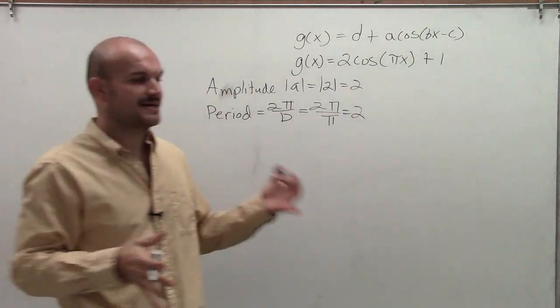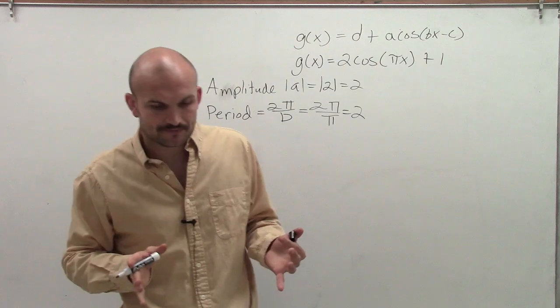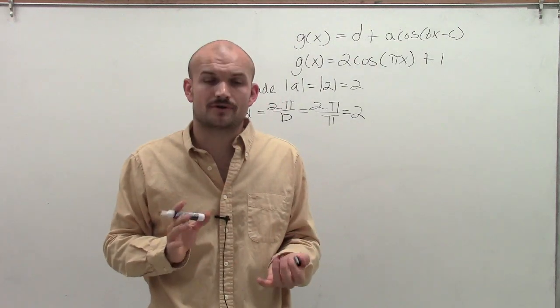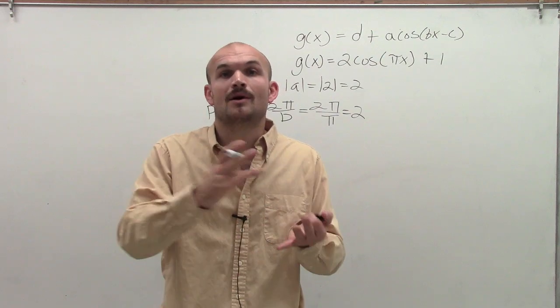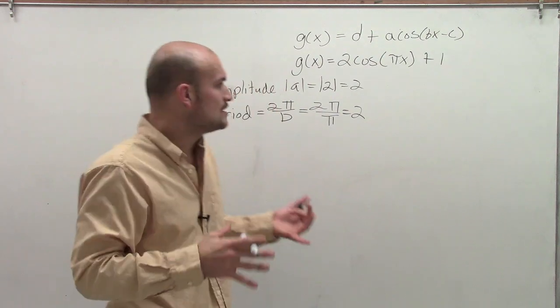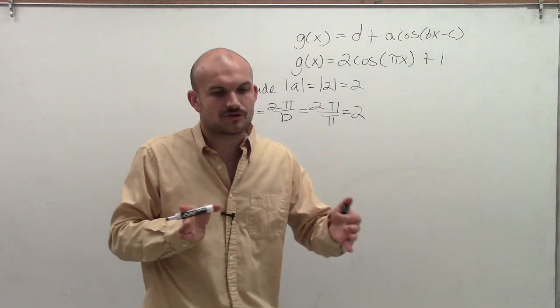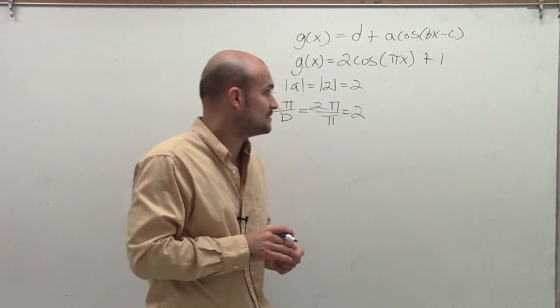Now the next thing we want to do is talk about our critical points. And our critical points, if you remember, were between our maximum, our minimum, our x intercepts. So every single one of those critical points was even distances away from each other.